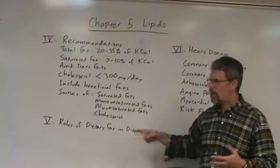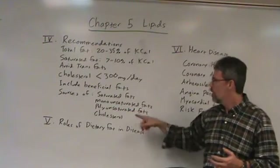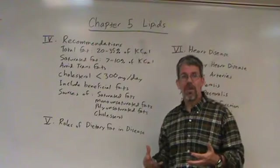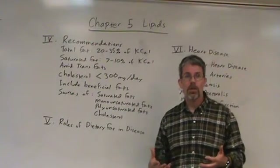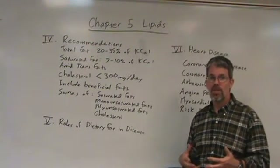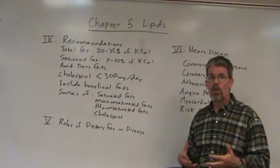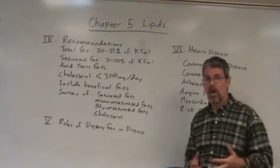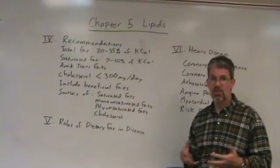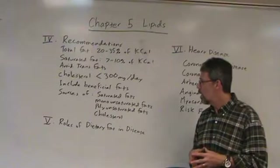Peanut oil is about half mono and half poly. Cholesterol is found in foods of animal origin; they're not found in plants. Some foods of animal origin are higher than others, such as organ meats — they tend to be the highest, such as liver and kidney.